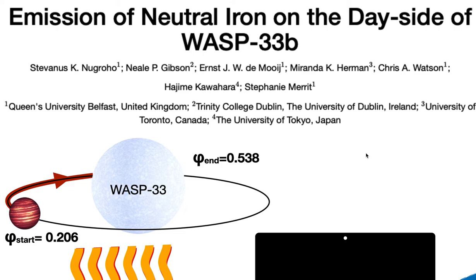Lothringer et al. 2018 suggests that neutral iron in a gas phase can also be the responsible agent to create the thermal inversions, by absorbing the short-wave radiation from the star and heating up the atmosphere.